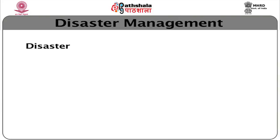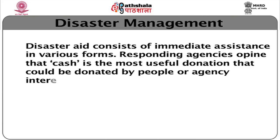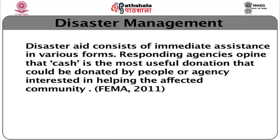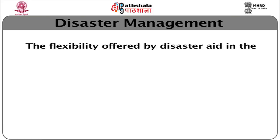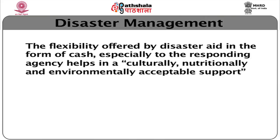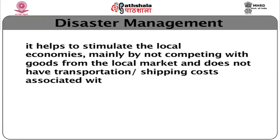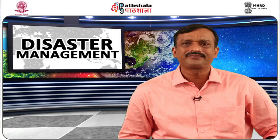Now let us talk about CASH. CASH is the most effective disaster relief form. Responding agencies opine that cash is the most useful donation that could be provided by people or agencies interested in helping the affected community, taken from FEMA 2011. The flexibility offered by cash especially to the responding agency helps in providing a culturally, nutritionally and environmentally acceptable support. It also helps to stimulate local economies by not competing with goods from the local market and does not have transportation or shipping costs associated with other forms of donation.